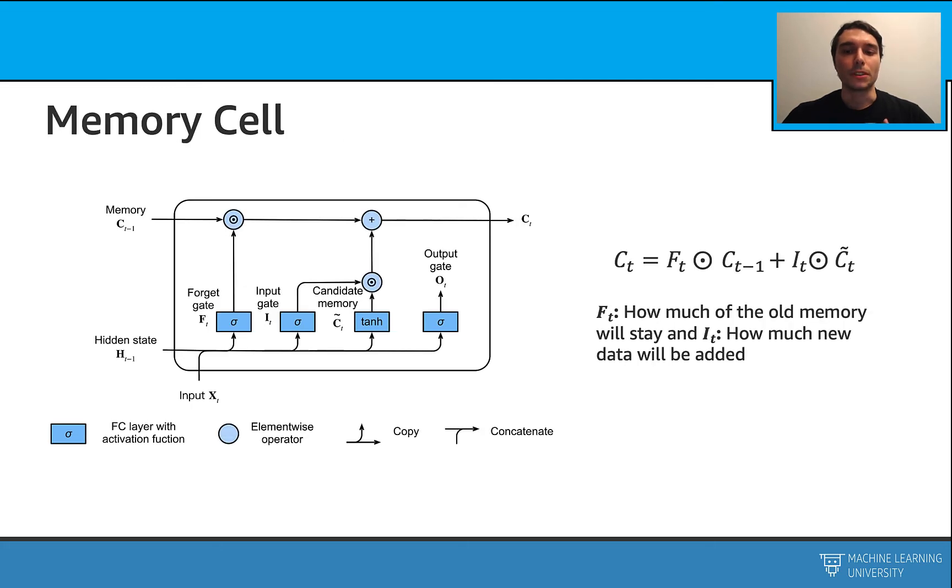Overall, the memory cell can be updated using the forget gate and the input gate. The forget gate decides how much the old memory is going to stay, and the input gate decides how much new data we are going to add. At the end, it's going to be the balance between these two.